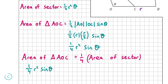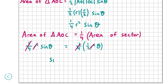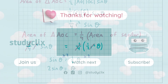Since the area of triangle AOC equals a quarter of the area of sector OAB, we have: one quarter r squared sine theta equals one quarter times one half r squared theta. The one quarter cancels on both sides, and r squared cancels on both sides, leaving sine theta equals one half theta. Multiplying both sides by 2 gives 2 sine theta equals theta, which is what we wanted to show. That's the answer for part C and the end of the video — thank you very much for watching and I hope I helped you.